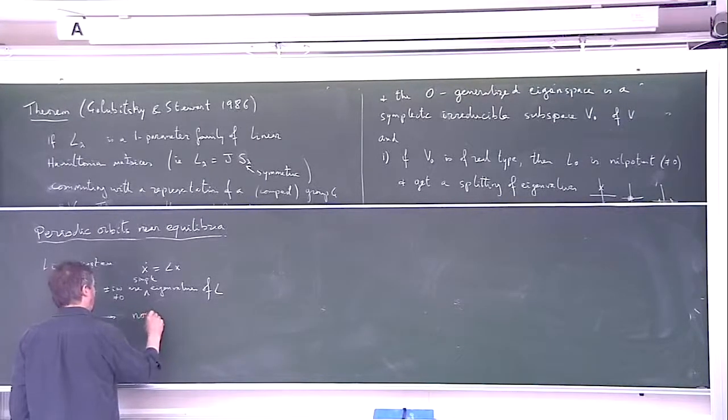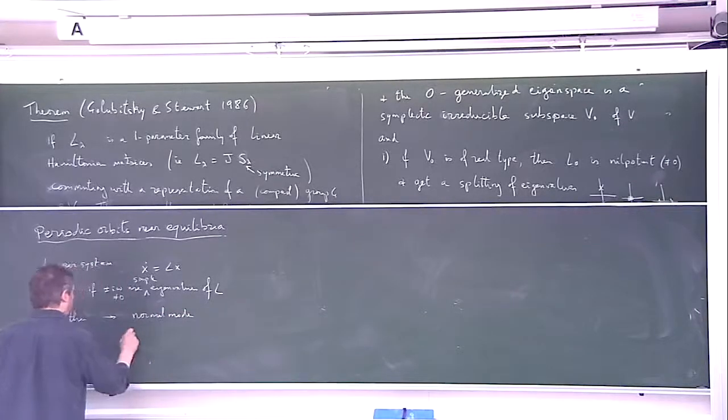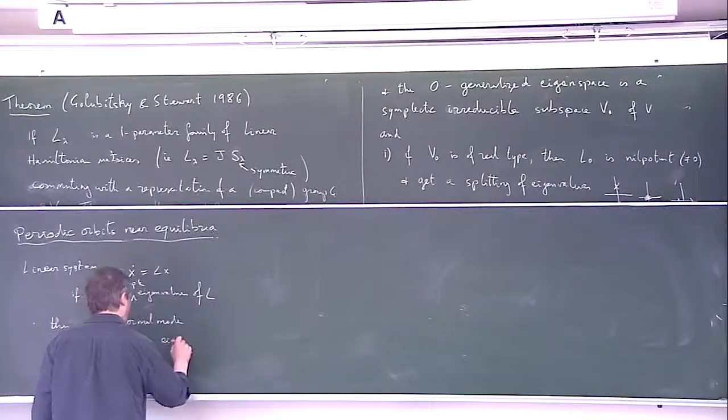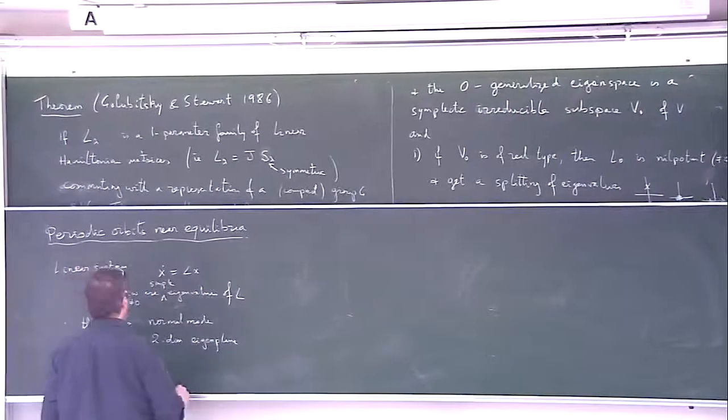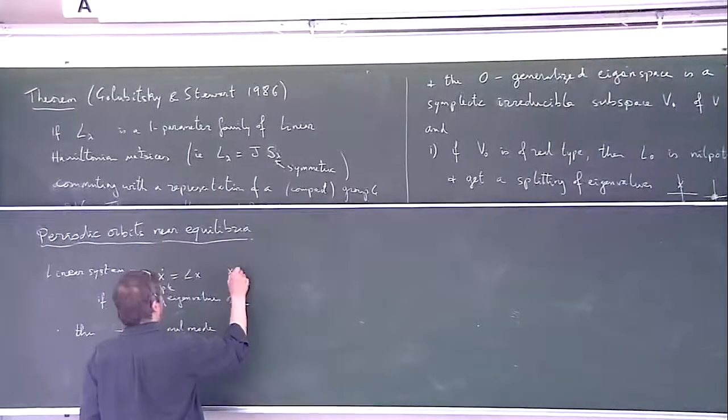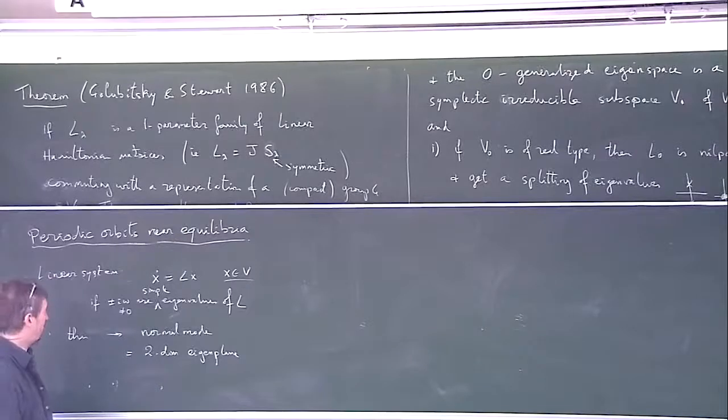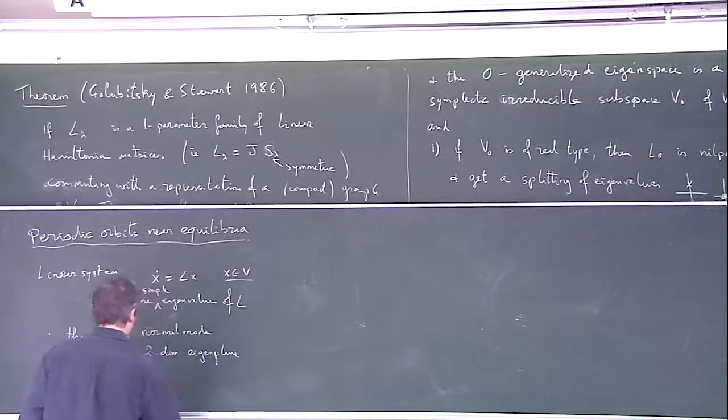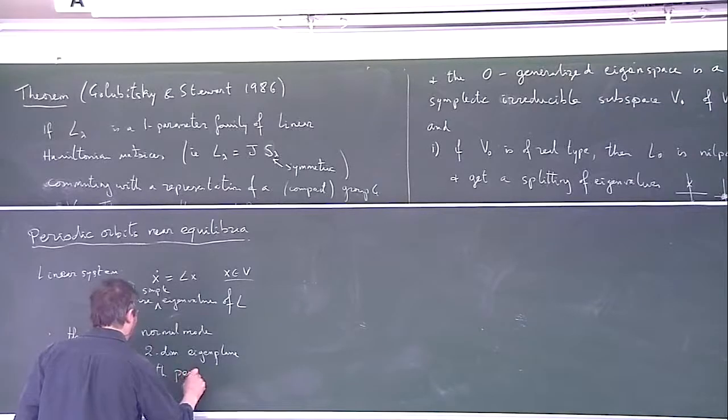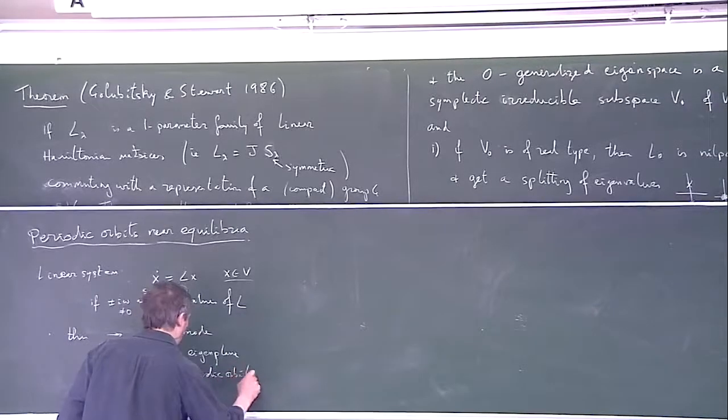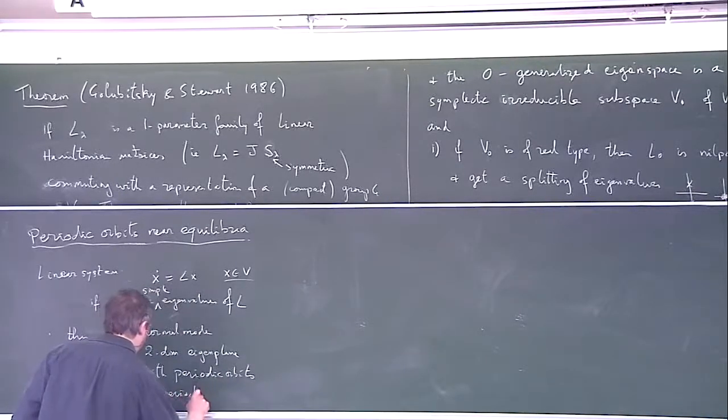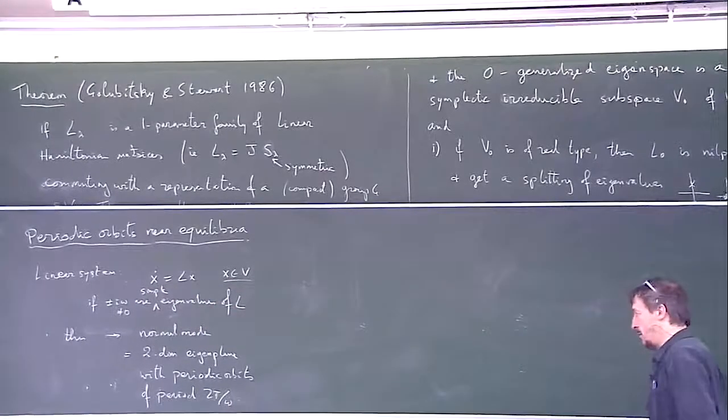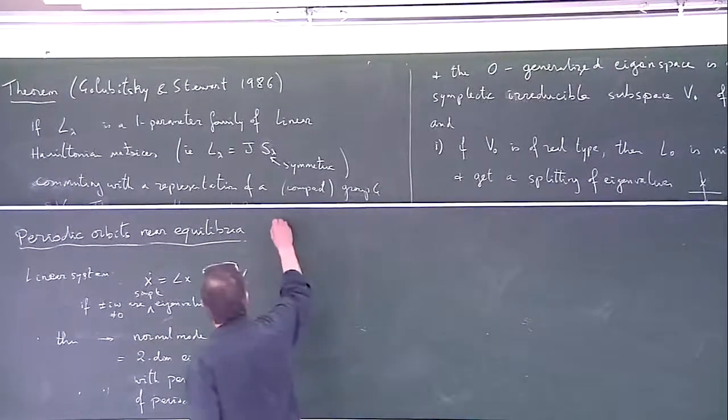Then you get a normal mode. And the normal mode is the two-dimensional eigenplane with periodic orbits of period 2 pi over omega, right? That's just first-year undergraduate differential equations.